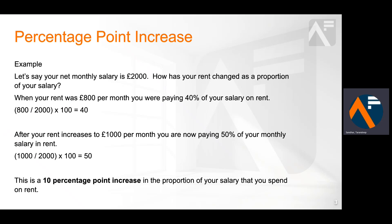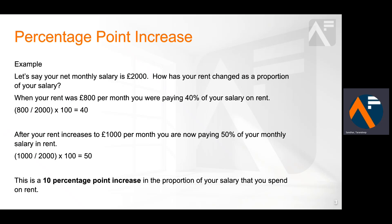Percentage point increase describes the change in a proportion of something relative to another. Let's say your net monthly salary is £2,000. How has your rent changed as a proportion of your salary? When your rent was £800 per month, you are paying 40% of your salary on rent. £800 divided by £2,000 is 0.4 or 40%.